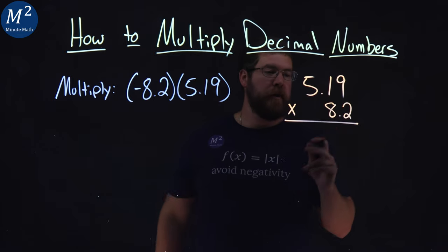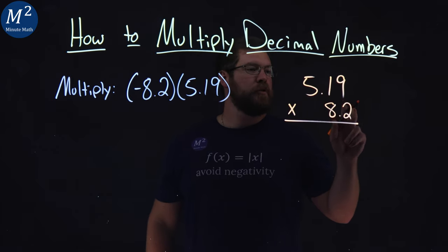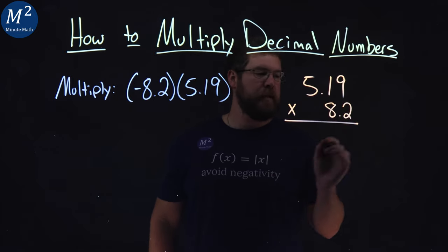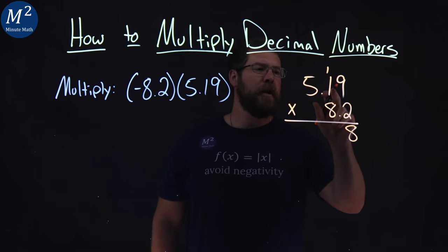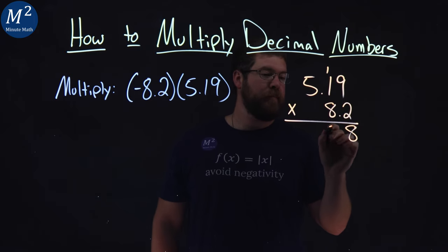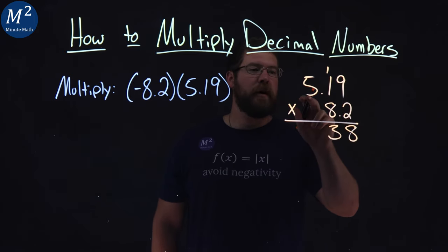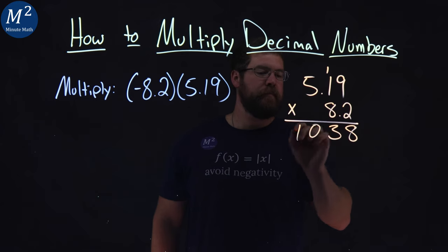Well now my process for multiplication. 2 goes first. 2 times 9 is 18. 8 right here, carry the 1 over. 2 times 1 is 2, plus 1 is 3. And 2 times 5 is 10. Not too bad.